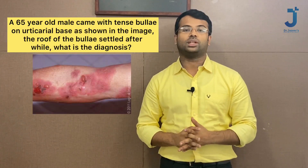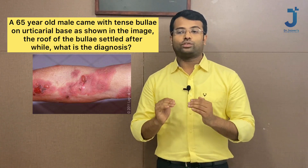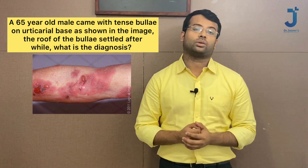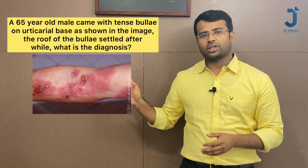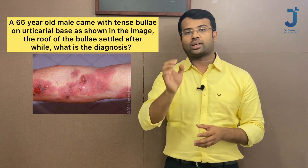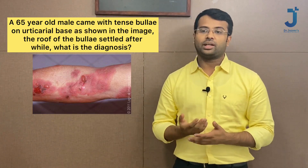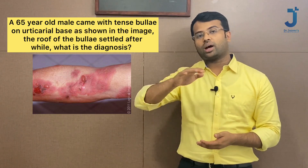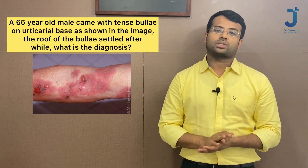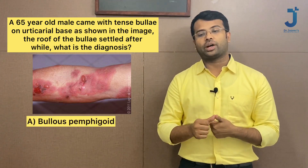The next question is from the chapter of vesiculobullous diseases. A 65-year-old male presents with a tense bulla on an urticarial base; the roof of the bulla has settled after a while. A tense bulla means it is originating from the deeper layers of the skin, and the roof has settled on its own.